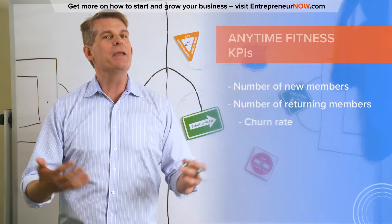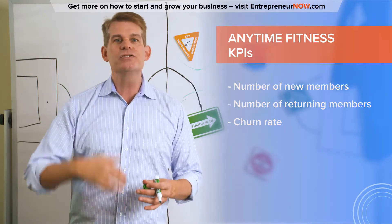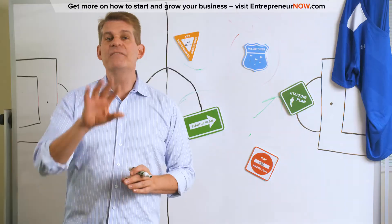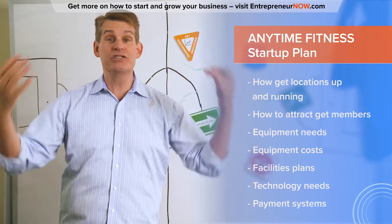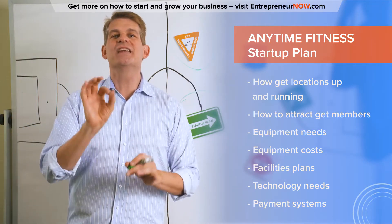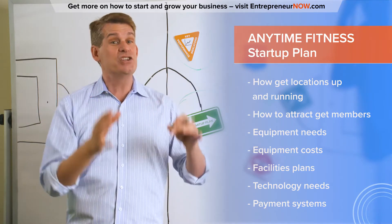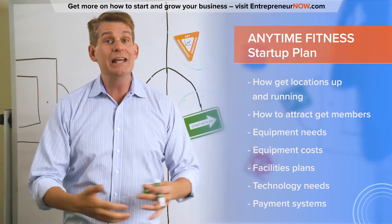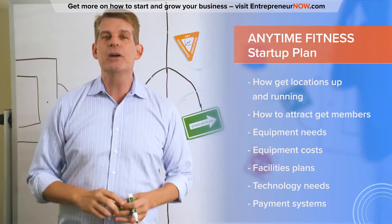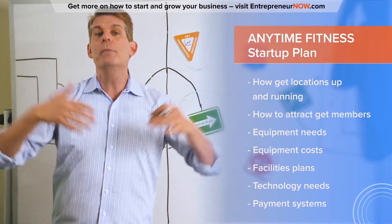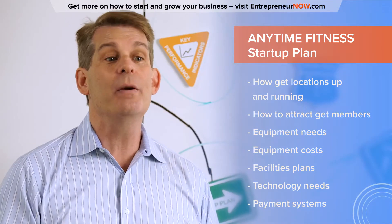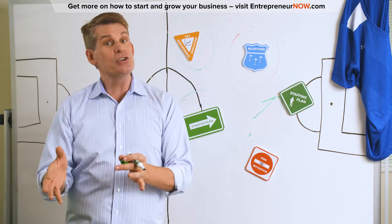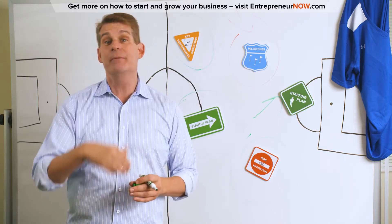KPIs for a membership business like a gym include number of new members, number of returning members, and churn rate — all very important metrics tracked across the fitness industry. For the startup plan, you'd want to know how they're going to get locations up and running, what equipment is needed at each location, and how much it's going to cost. Optional components unique to their business include a location and facility plan — each store is about 4,600 square feet — along with technology like security systems, payment systems, membership systems, and how they're going to fund all the gym equipment.